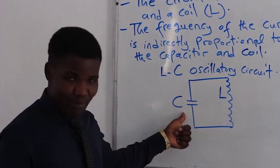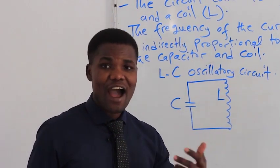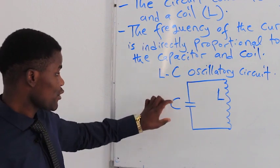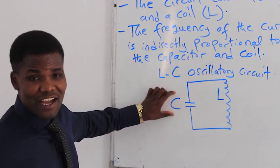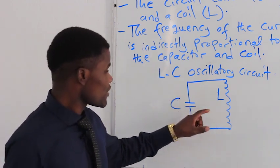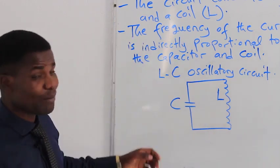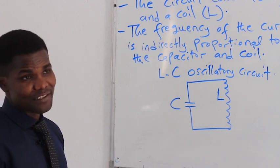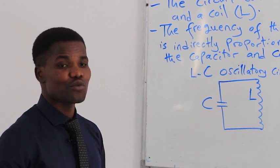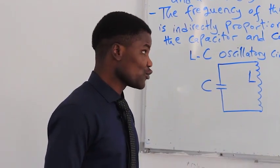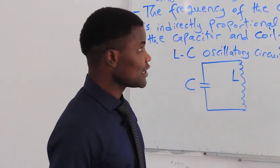If you have a small capacitor size and a small coil size, you will generate a high frequency in that system, because a small capacitor will charge and discharge very fast. Similarly, a small coil will allow charging and discharging of the capacitor within a very short time. If it charges and discharges quickly, the frequency of vibration will be high, and vice versa. So frequency and capacitor/coil sizes are inversely proportional.